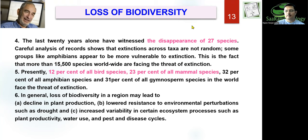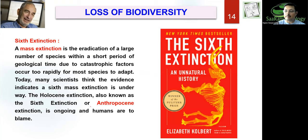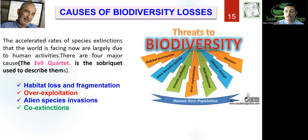If biodiversity loss occurs, there will be major impacts: decline in plant production, lowered resistance to environmental perturbations like drought, and increased vulnerability in ecosystem services such as plant productivity, water use, and pest and disease cycles. There have been 5 mass extinctions in the world's history, but we are discussing a sixth extinction — the Anthropocene — caused by human-related anthropogenic activities. The rate of extinction now is 100 to 1,000 times faster than natural rates due to human activities. Recently, Australia experienced great jungle fires due to global warming, and nearly half of the biodiversity of that continent was lost.